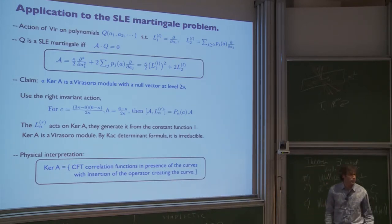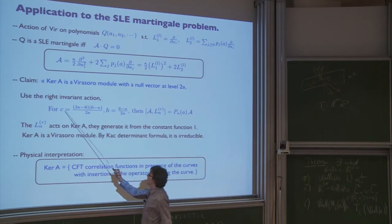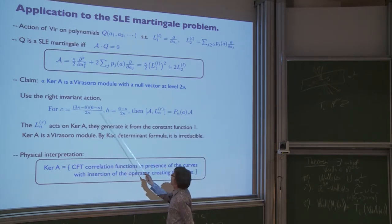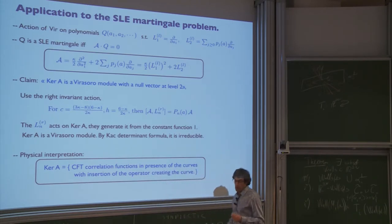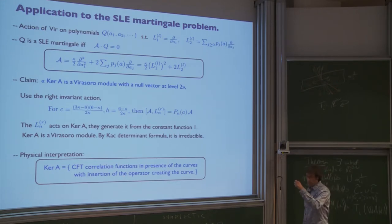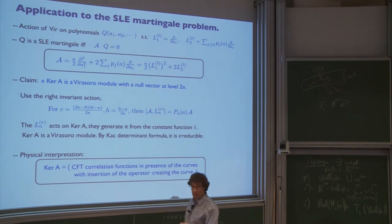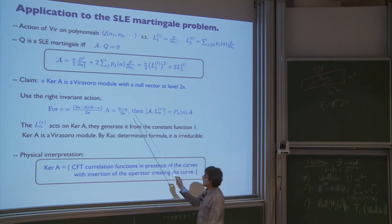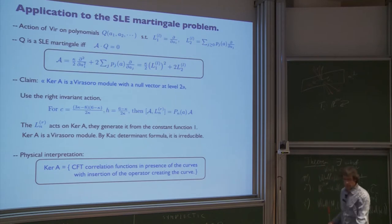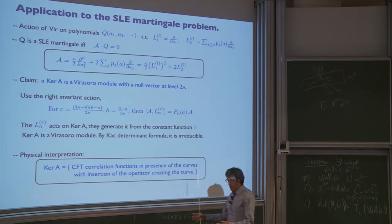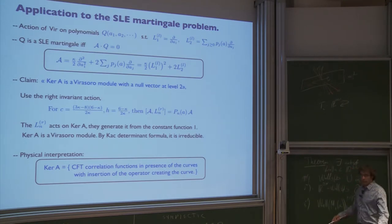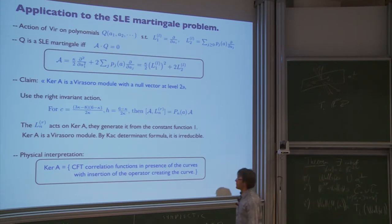So the Virasoro kernel is a module for the Virasoro algebra — a module with central charge less than 1 and weight h at specific values. You can check it is an irreducible module: you get all elements of the kernel by acting with L_{-1}, L_{-2}, L_{-3}, and so on on the constant function. For these values, the module has a null vector at level 2: there is a linear combination in the universal enveloping algebra of degree 2 which annihilates the constant function. By Kac's determinant formula for the Virasoro module, the module is irreducible for generic κ. So that's the proof: the kernel of the operator is an irreducible module of the Virasoro algebra.